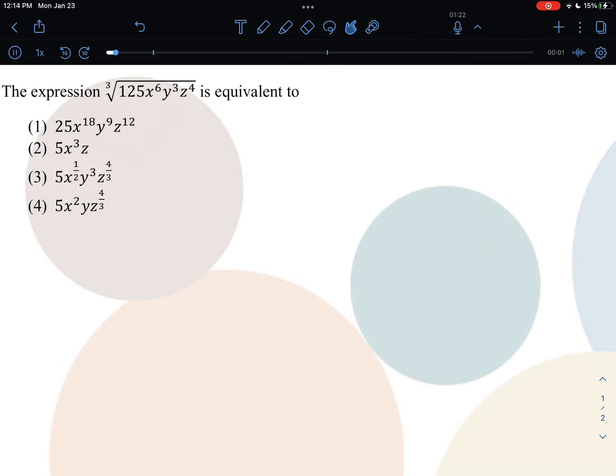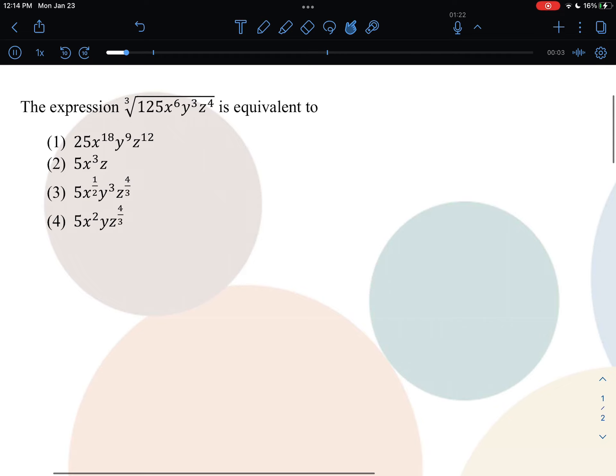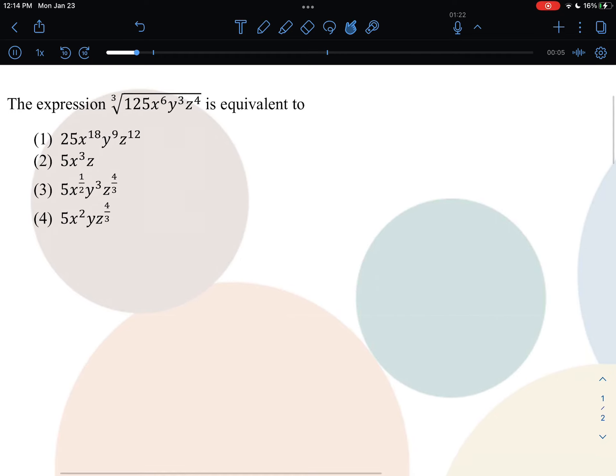It's time for another Algebra 2 Regents quick question walkthrough. This one says the following expression is equivalent to. This expression is the cube root, so I'm going to rewrite it as all of the part inside the radical to the 1/3 power.